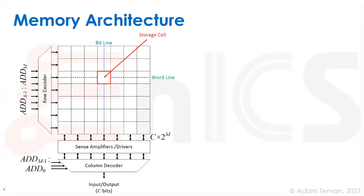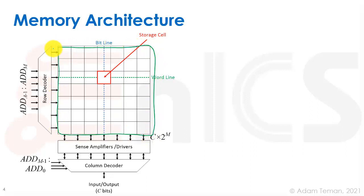Last time we started with showing you what a memory structure looks like. Here we have the memory array, which is the core of the memory, and it's made up of bit cells. Each one of these is a bit cell or a storage cell — it's usually going to be a 6T SRAM cell, but we'll see in a future lecture that there are other types of cells as well.